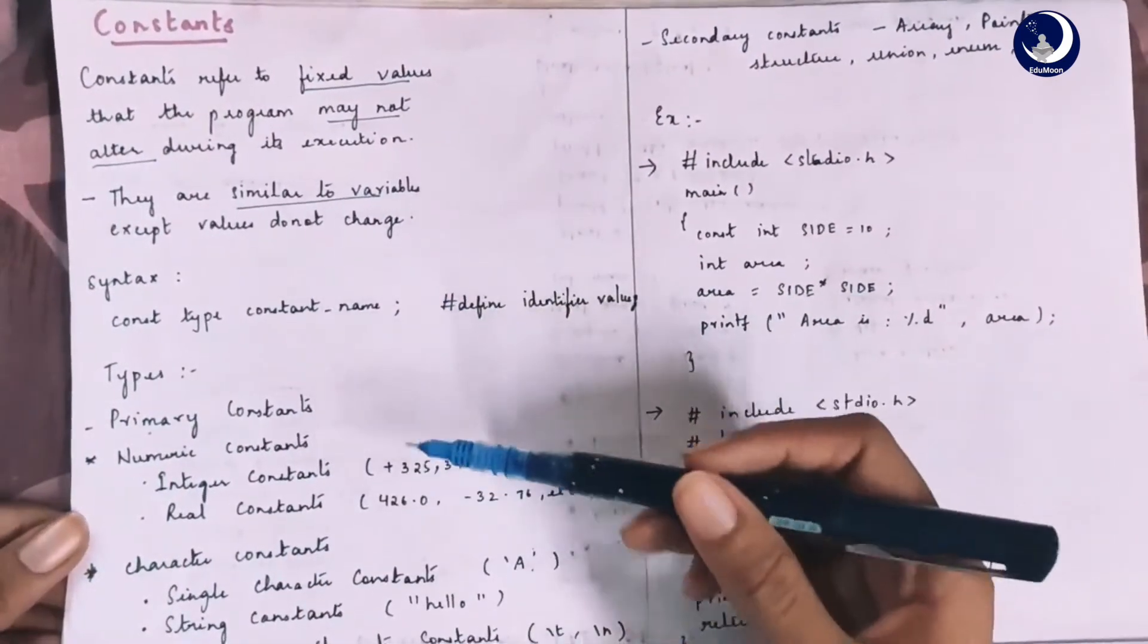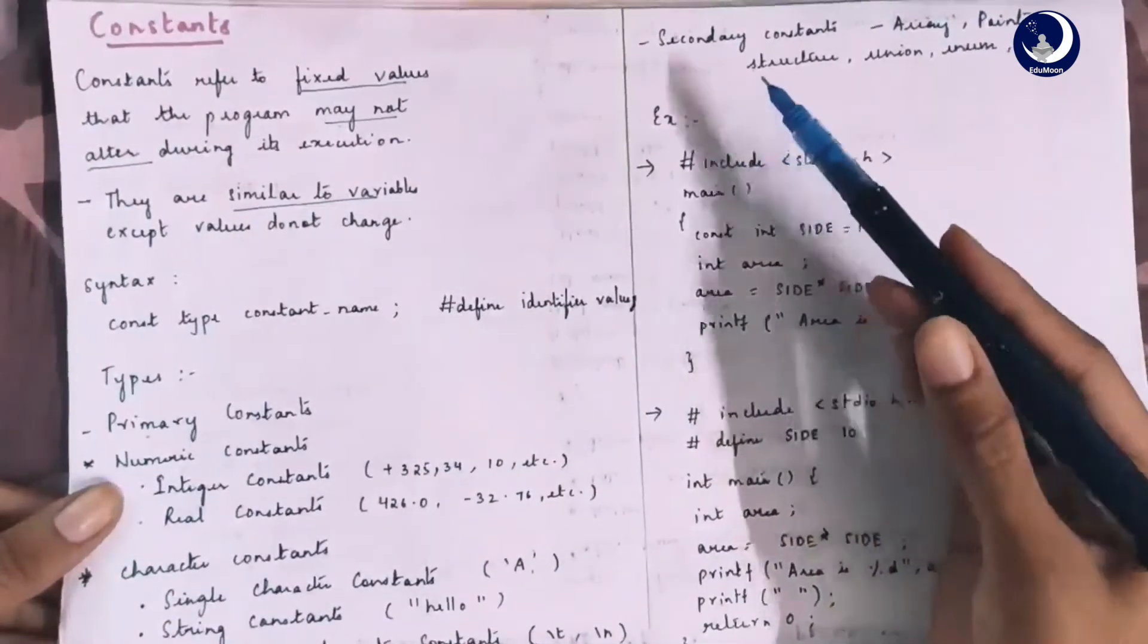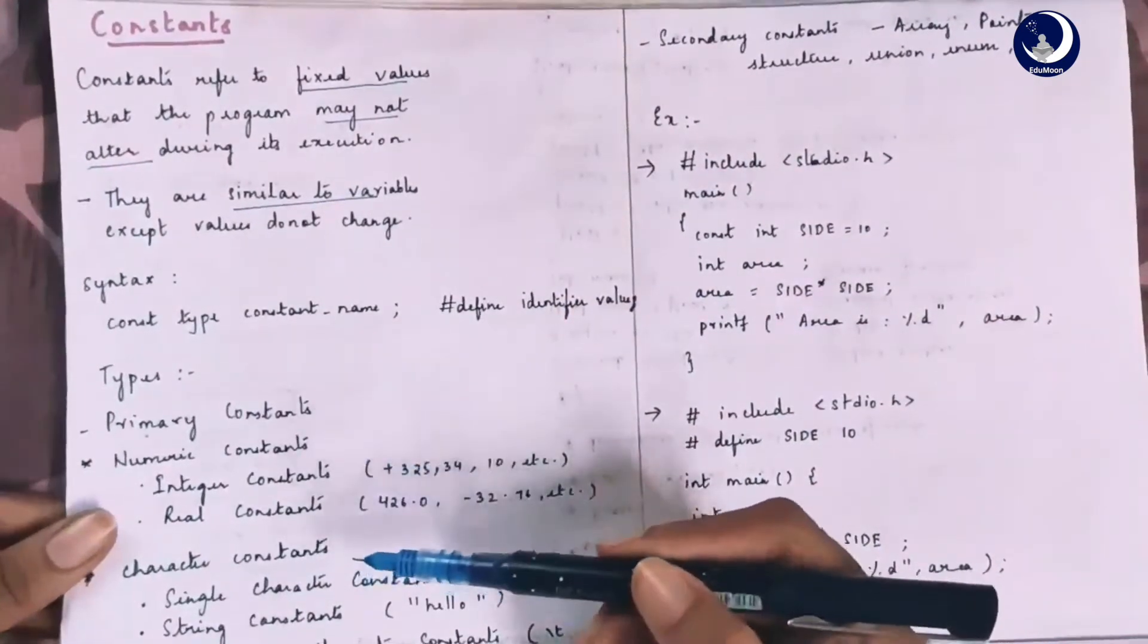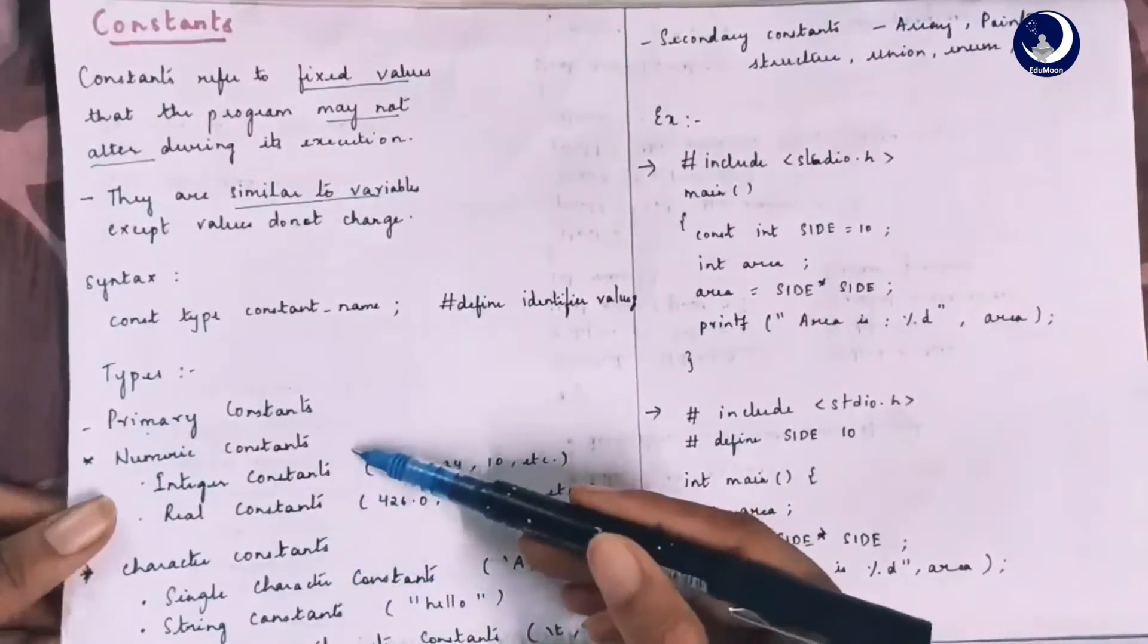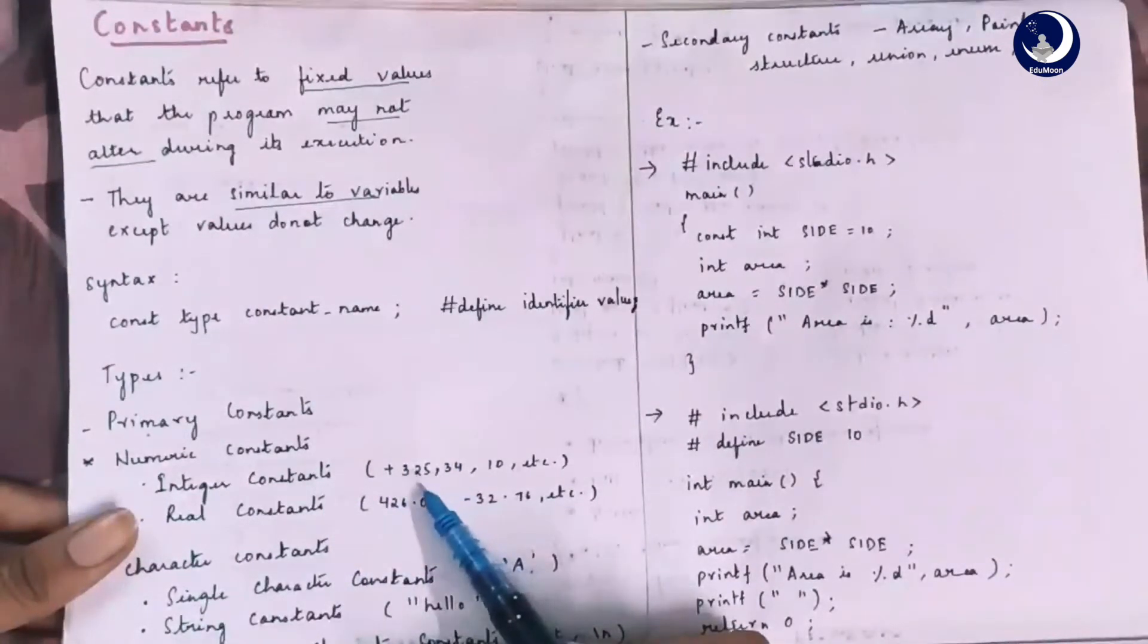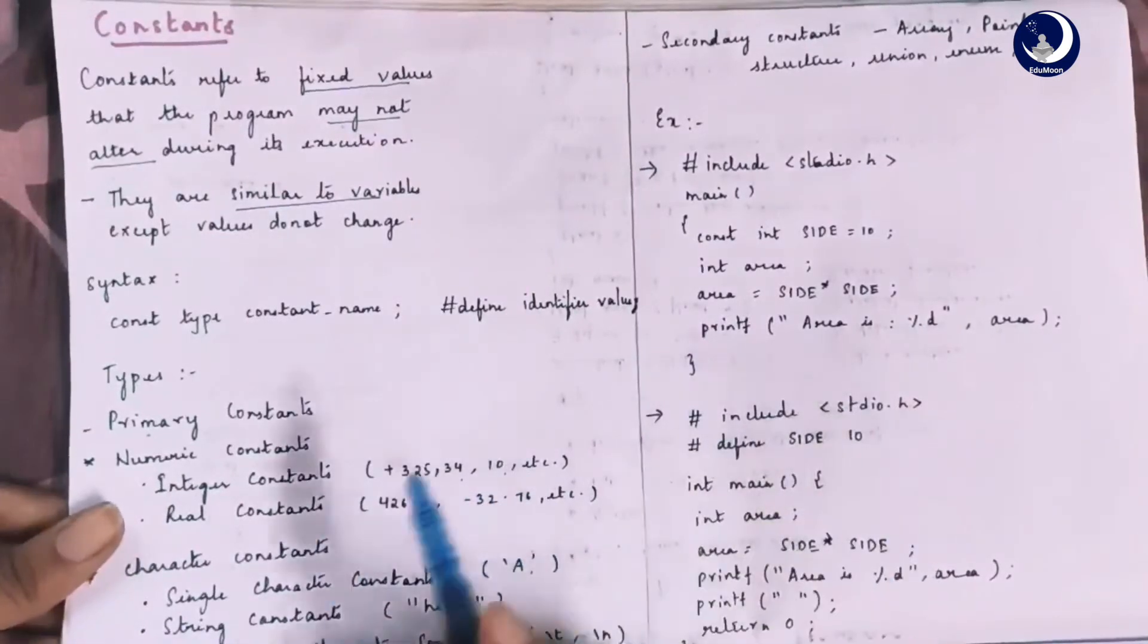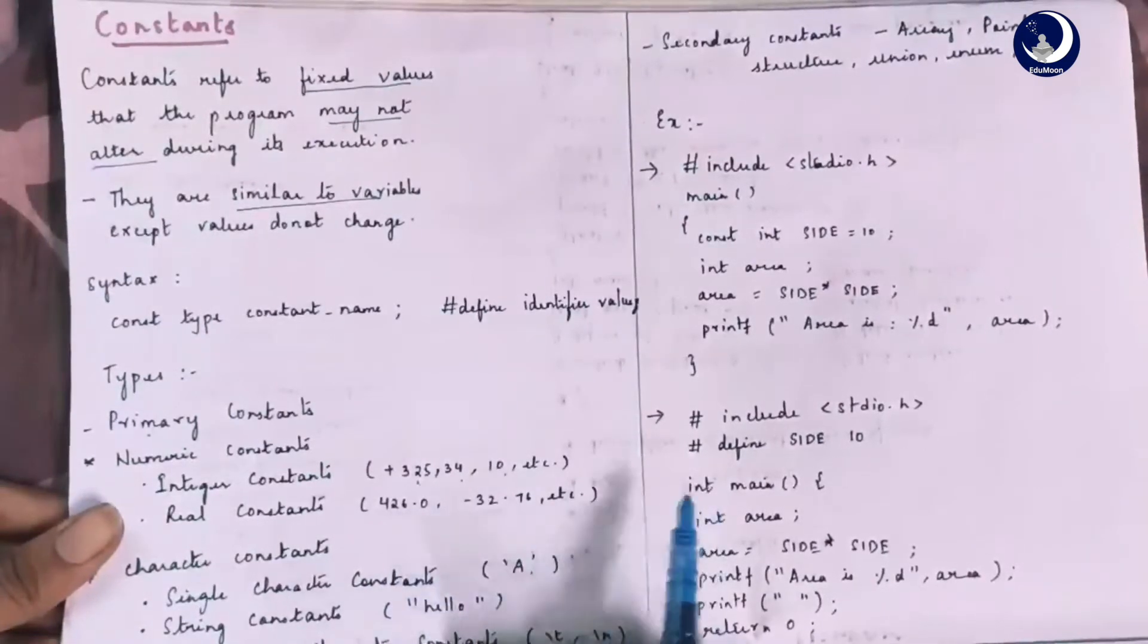Constants are of two types, primary constants and secondary constants. Primary constants is further classified into numeric constants and character constants. Under numeric constants, we have integer constants where values of integers are stored like positive 325, 34, 10, etc. and real constants which have real numbers 426.0 and so on.